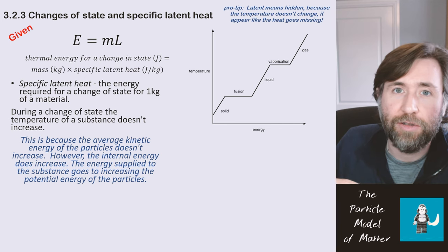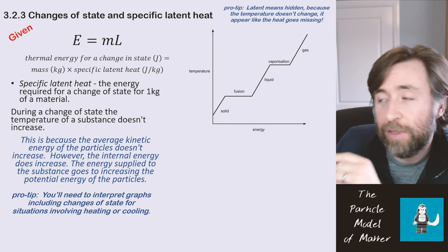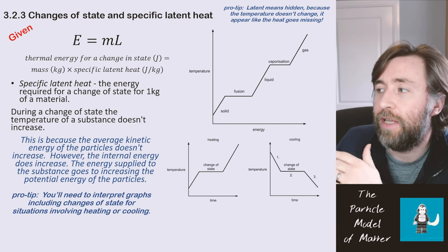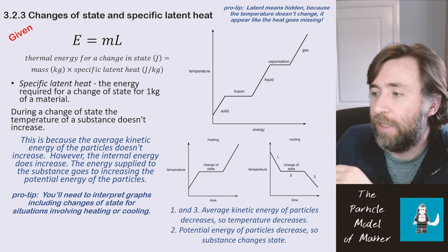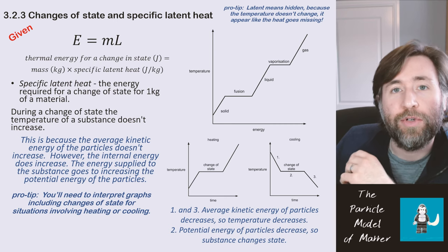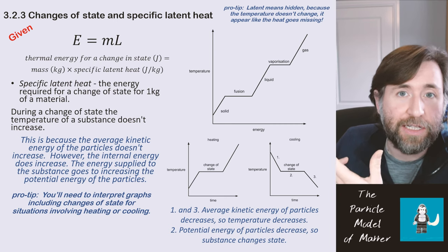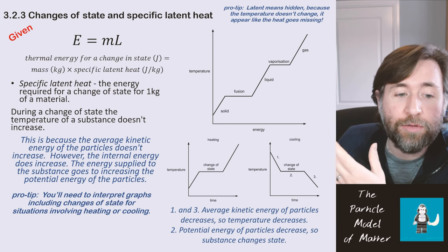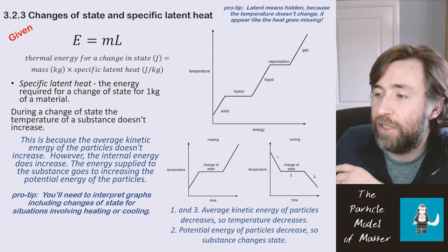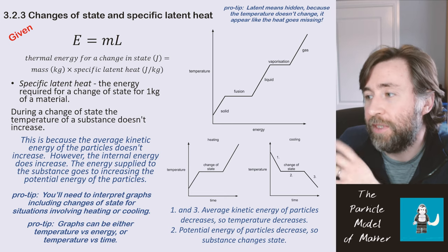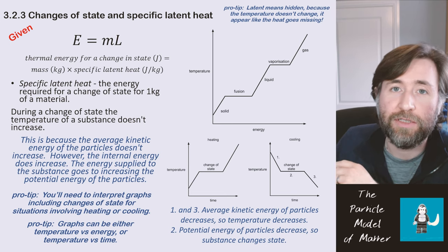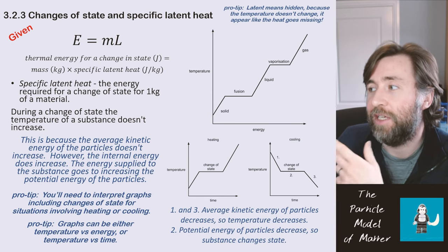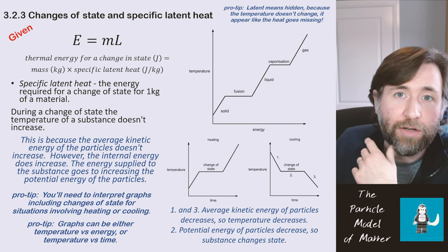There's still energy going in but the temperature isn't increasing during those points because what's actually increasing is only the potential energy, not the kinetic energy of the particles. You need to be able to interpret graphs like these — heating or cooling with flat lines during the change of state. Points one and three are the periods where average kinetic energy is changing, and during point two, the change of state, only the potential energy of the particles is changing. These graphs can be temperature versus time or temperature versus energy — it's the same idea.